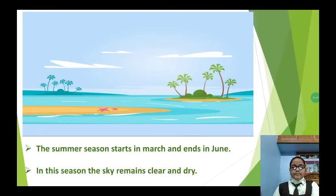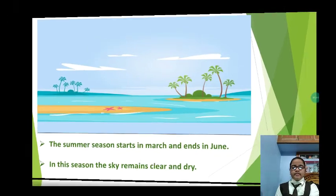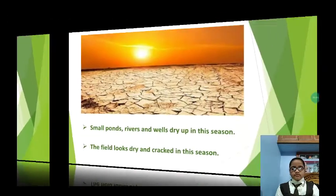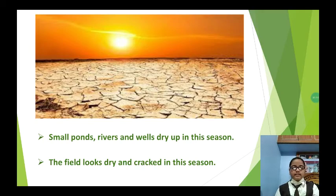The summer season starts in March and ends in June. In this season, the sky remains clear and dry. Small ponds, rivers and wells dry up in this season. The field looks dry and cracked in this season.